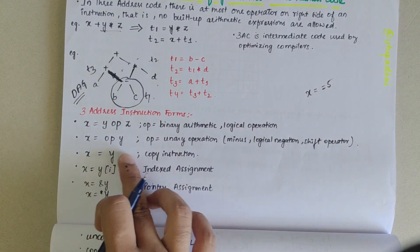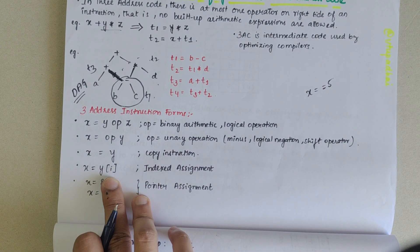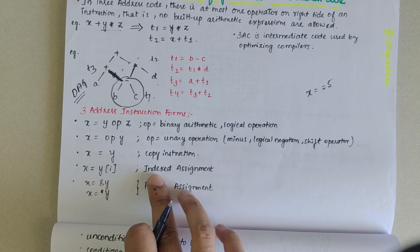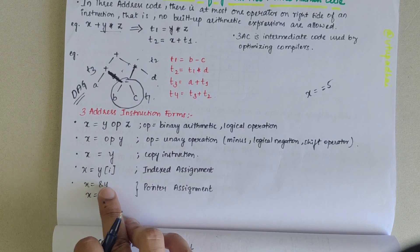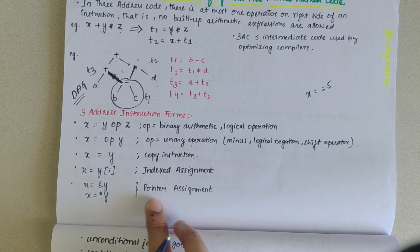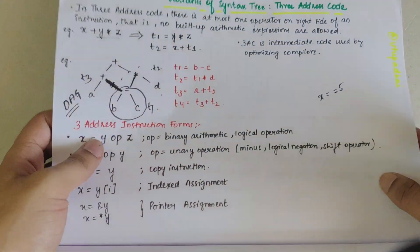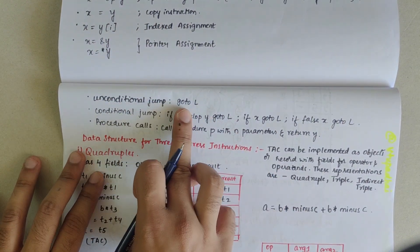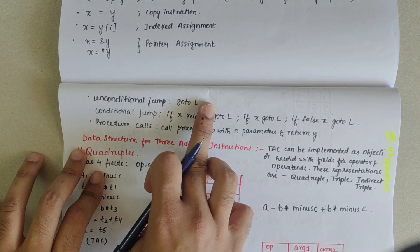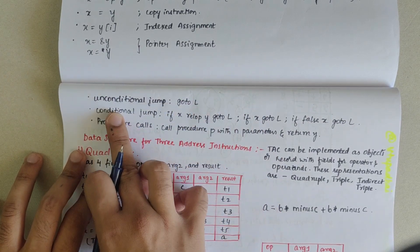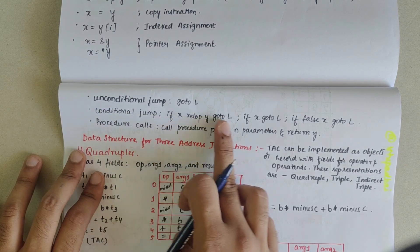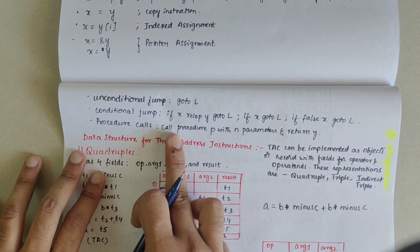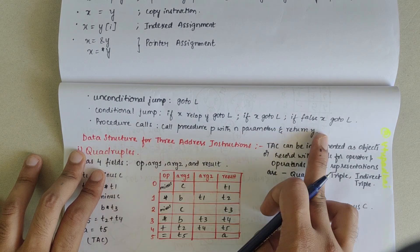If we write x equals y[i], the i refers to an index in the array — this is indexed assignment. If we have x equals &y or x equals *y, this represents pointer assignment. We also have unconditional jump: go to label l. For conditional jumps: if x go to l, or if false x go to l. We also have procedure calls, where we call a procedure p with n parameters and returning y.